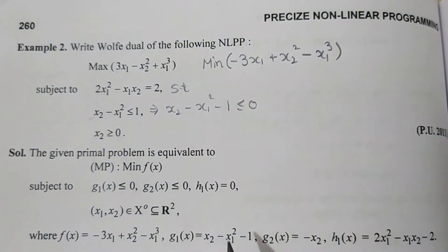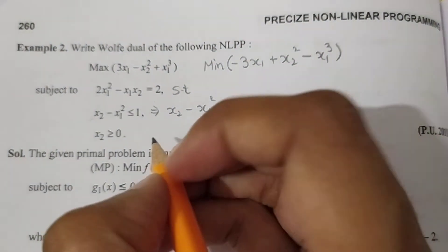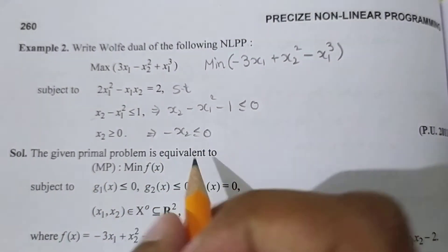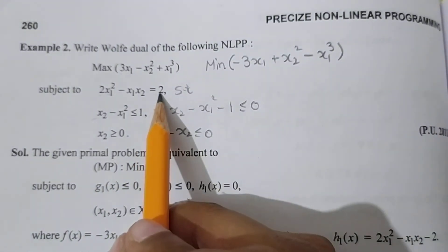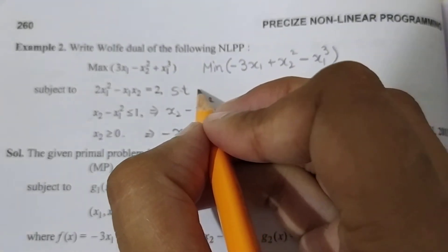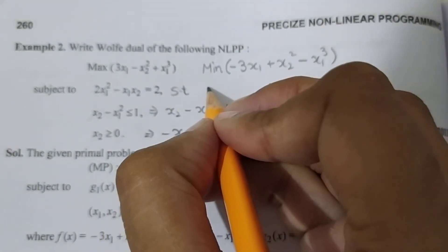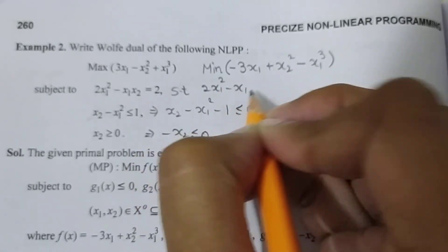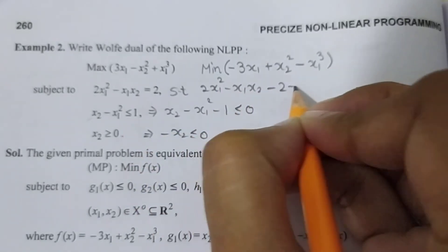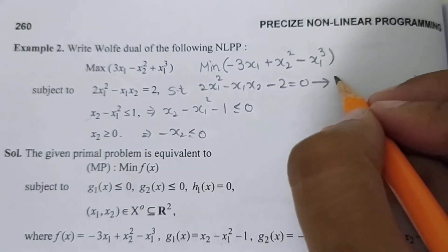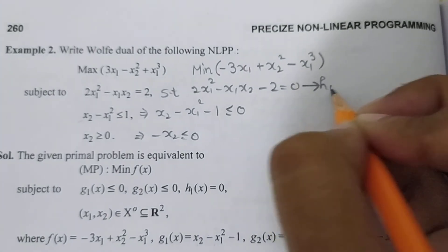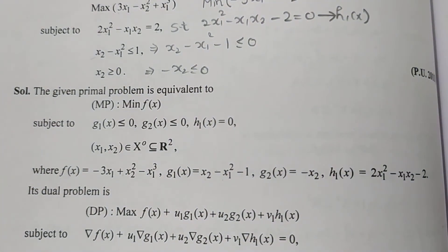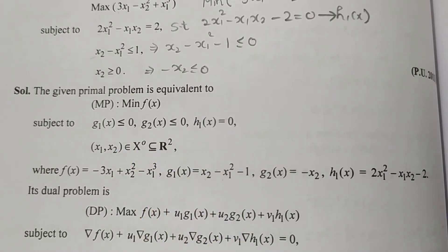तो g1 की value बन गई। g2 की value है: minus x2 less than equal to 0. जो equation equal to में होती है, उसकी value होती है h1: 2x1 square minus x1·x2 minus 2 equal to 0. यह h1(x) की value है। इस तरह सारी equations consider कर लीं।